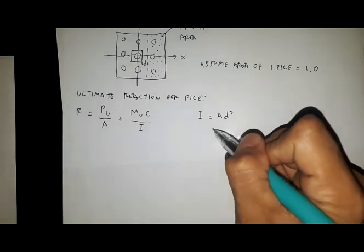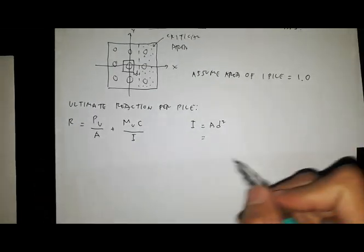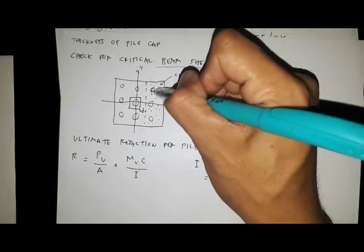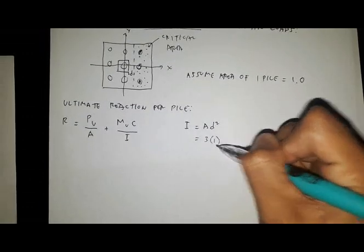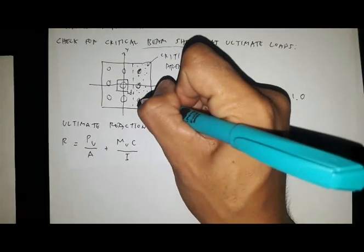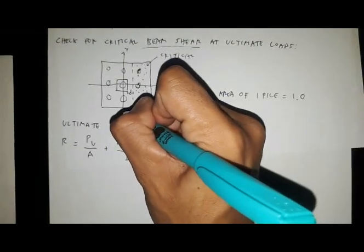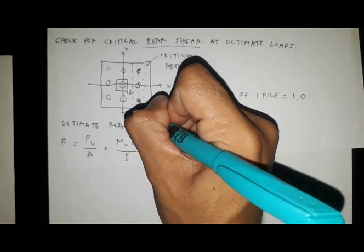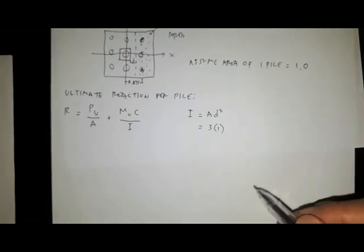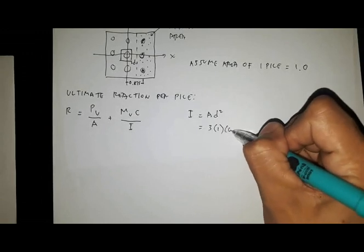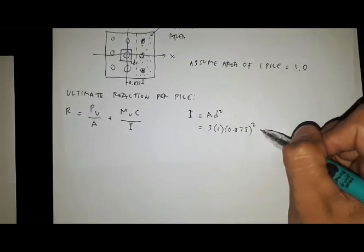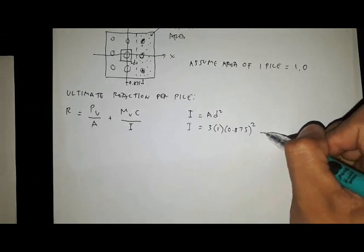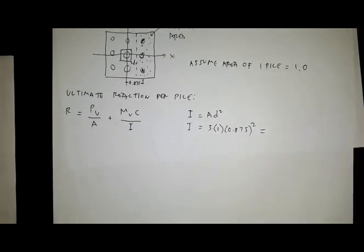By substitution, I equals the area of these three piles, so three times one times the distance D squared. The distance between the piles is 0.875 meters, so 0.875 squared.